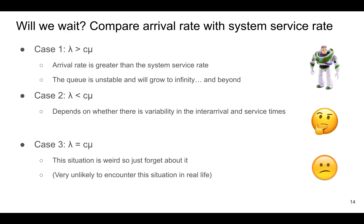So when do customers have to wait in the queuing model? Let's compare the arrival rate lambda with the system service rate C times mu. Each server can serve mu customers per unit time, and we have C of them. If the arrival rate is greater than the system service rate, the queue is unstable and will grow to infinity. If the arrival rate is less than C times mu, it depends on whether there is variability in the inter-arrival and service times.